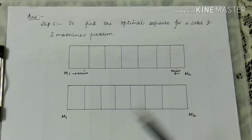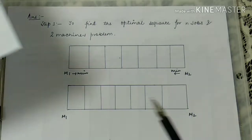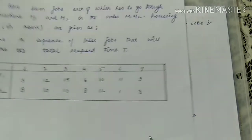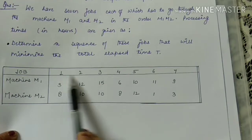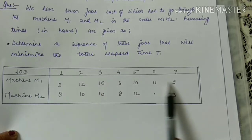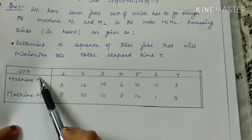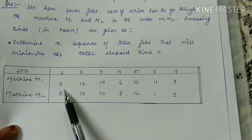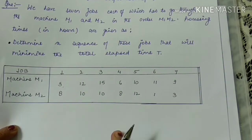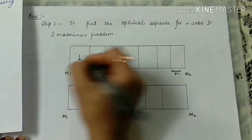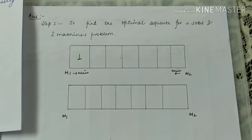I will tell you why I have made two boxes or why there will be two sequences — because in this question, there is an occurrence of a tie. Starting with step 1 to find the optimal sequence: we check the jobs. The minimum time required by M1 is job 3. That is the job which requires the minimum time, so I will write it in the first box for M1.